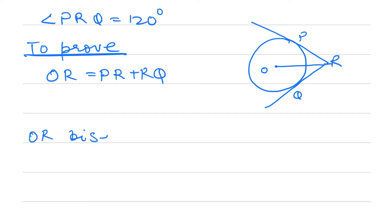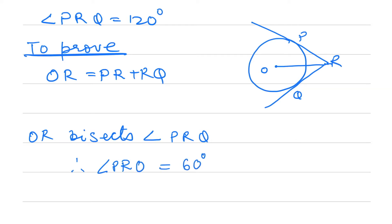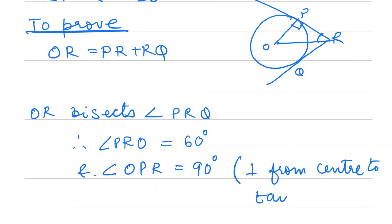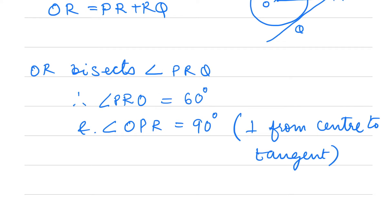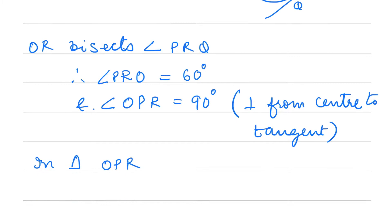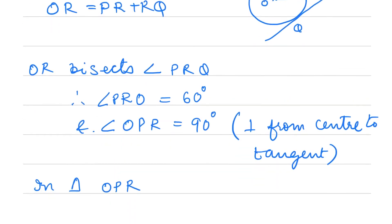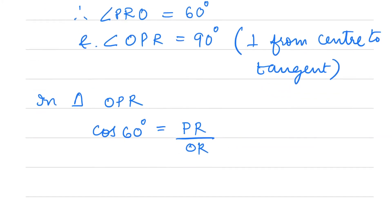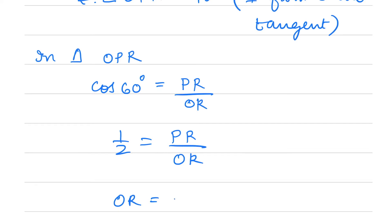Since OR bisects angle PRQ, angle PRO is equal to 60 degrees. Joining OP, angle OPR is 90 degrees — perpendicular from center to tangent at point of contact. In triangle OPR, cos 60 degrees equals PR by OR. Since cos 60 is half, OR is equal to twice PR.